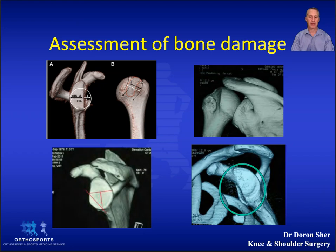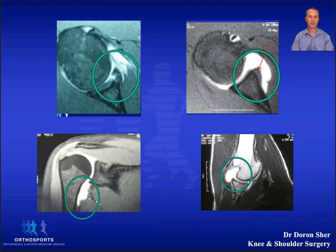On these images we see a large Hill-Sachs lesion and significant glenoid bone loss. If the MRI scan is done within a week of the injury, the joint is full of blood and the blood will outline any labral tears.